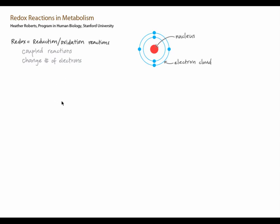We get energy from redox reactions. The oxidation of food like glucose, coupled with the reduction of oxygen to form water, yields ATP. Cellular respiration is simply a series of redox reactions. So to understand metabolism, we have to understand redox. In this tutorial, we'll think about redox reactions in two contexts: in metals and in carbon compounds. We'll start by looking at the general case for each context, and then we'll see how redox applies to cell metabolism.